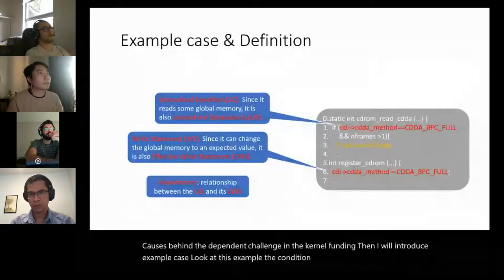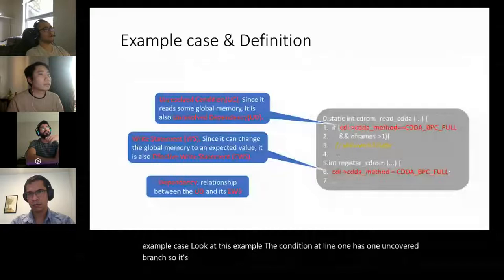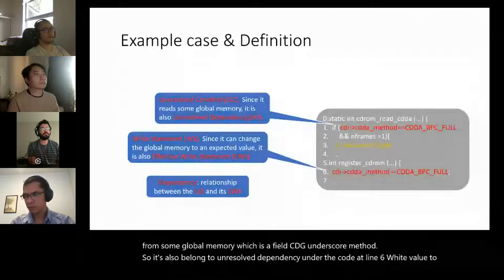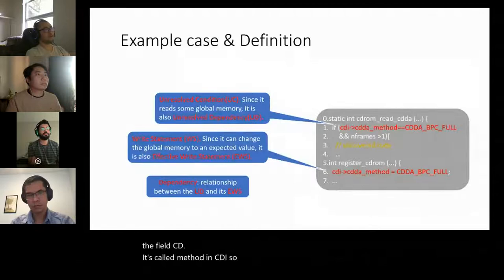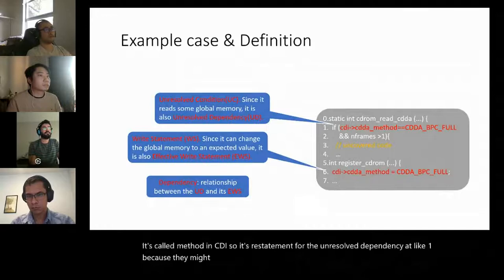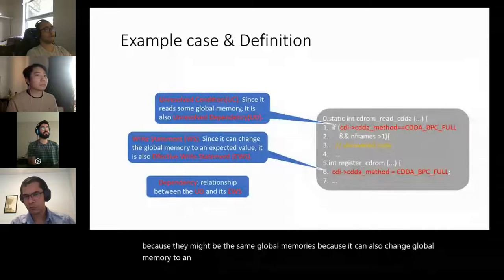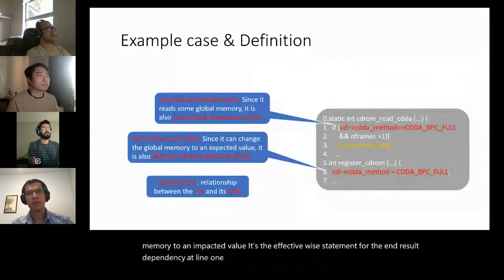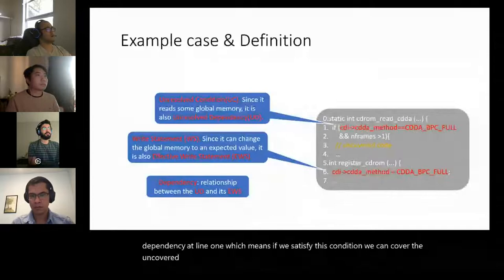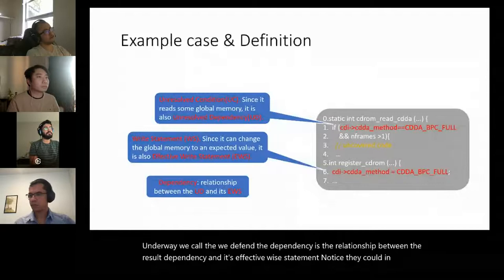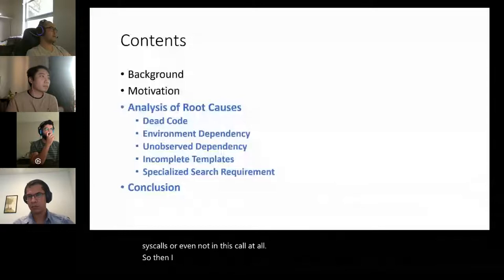As an example, a condition at line one has an uncovered branch — this is called an unresolved dependency since it reads a value from global memory, specifically the field cdi_underscore_method in cdi. Code at line six writes to that same field, making it a write statement for the unresolved dependency. Because it can change the global memory to an impacted value, it is an effective write statement, meaning satisfying that condition covers the uncovered code at line three. We define dependency as the relationship between an unresolved dependency and its effective write statement, noting they could be in different syscalls or not in the code at all.